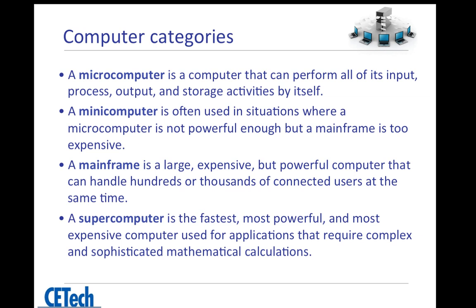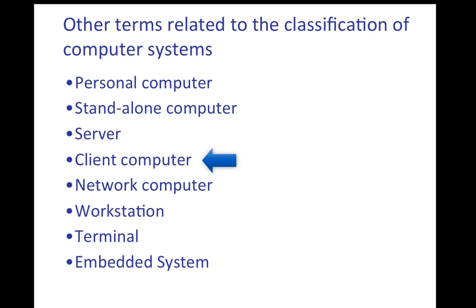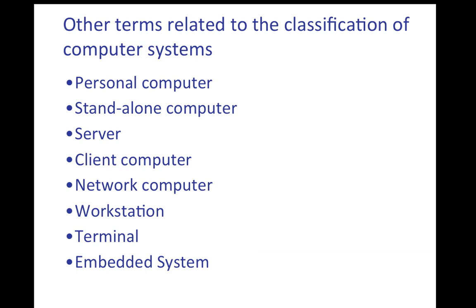These are the definitions of the categories just mentioned, in case you want to take notes or pause the video to read them. There are also other terms used to classify computers. Personal computer is another name for microcomputer. Servers are computers that provide services to other computers or users — for example, file, email, and web servers. Clients are computers that access or consume the services provided by servers. Workstations are high-end microcomputers designed for technical or scientific applications, such as video production or satellite control. Embedded systems are computers designed for specific control functions within a larger system — a computer embedded as part of a complete device, often including hardware and mechanical parts. Embedded systems control many devices in common use today. The other terms are fairly obvious, but you should do a quick search to learn more about them.